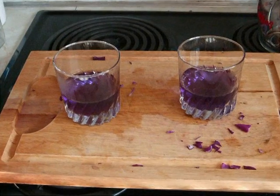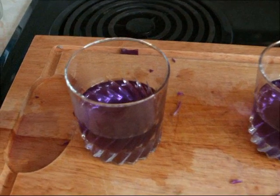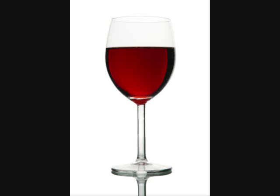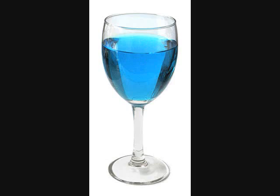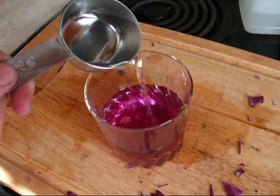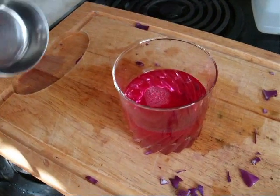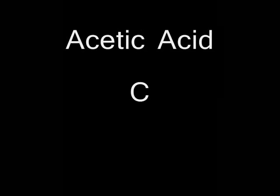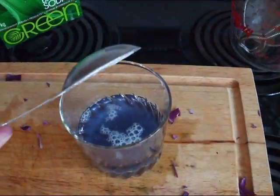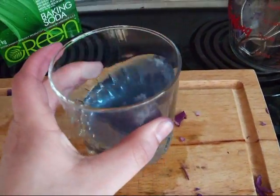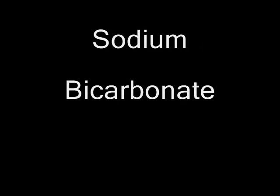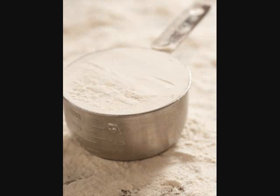Common acids and bases can be added to the solution from red cabbage to determine if they are acidic or basic. Acids will cause the indicator to change to a color that is more dark and red, while bases will cause it to turn a more blue or green color. This solution is an acid — it is actually vinegar, which contains acetic acid, CH3COOH. This substance is a base: it is sodium bicarbonate, NaHCO3, which is more commonly known as baking soda.